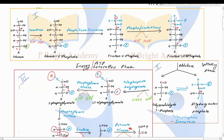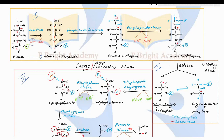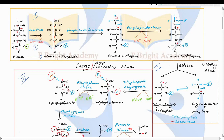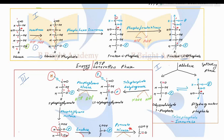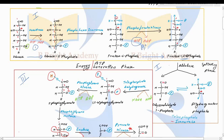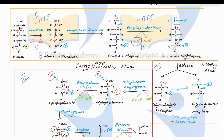In the utilization phase, there are two different places where ATP gets converted to ADP. When glucose gets converted to glucose-6-phosphate, one ATP is utilized. In the second reaction, fructose-6-phosphate gets converted to fructose-1,6-bisphosphate, and again one ATP is utilized. So two molecules of ATP are consumed here — one from each position — because ATP is being used to form a different product.